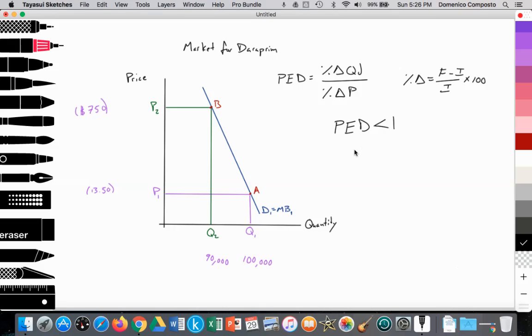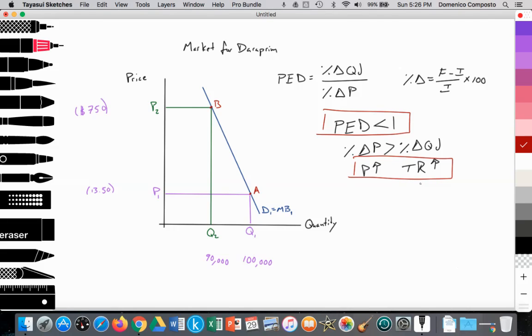Its PED value is less than 1, which means that the percent change in price is going to be greater than the percent change in quantity demanded. Thus, as the firm raises price, their total revenue is going to increase. So any firm that has an inelastic demand curve can get away with raising price to increase total revenue because the percent change in price is greater than the percent change in quantity demanded. That's the important point of this model.